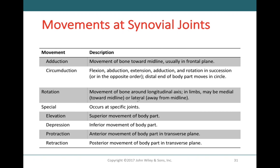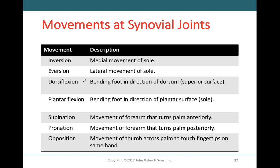Rotational movements move long bones about their longitudinal axis, with both medial and lateral rotation possible. Special movements include elevation — moving a body part superiorly — and depression, moving it inferiorly. Protraction moves a body part anteriorly; retraction moves it posteriorly. Dorsiflexion brings the superior part of the foot closer to the lower leg bones; plantarflexion pushes the foot in the other direction along its plantar surface. Supination turns the palms anteriorly; pronation turns them posteriorly.